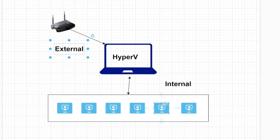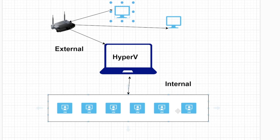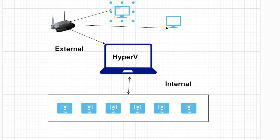Internal means that these machines are communicating with this laptop only, but they are not able to establish any connection outside, which means this router or network with multiple devices connected — if I create an internal connection, my virtual machines will be only communicating with this particular host machine. But if I create an external virtual switch, my machines through the laptop — through a virtual bridge — will be able to communicate with all other machines on my network and will be able to communicate on the internet as well.